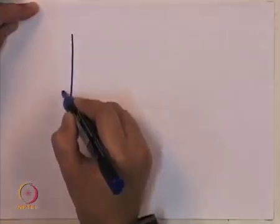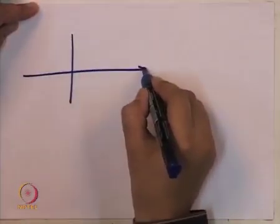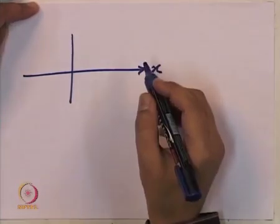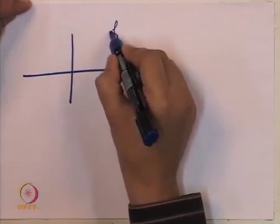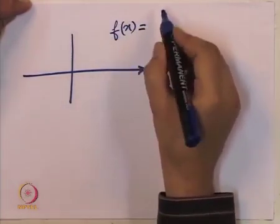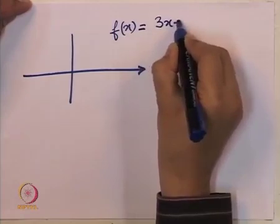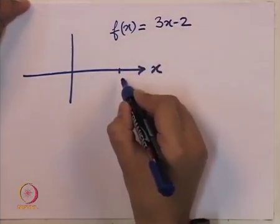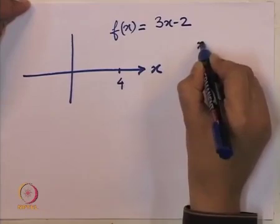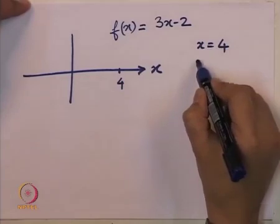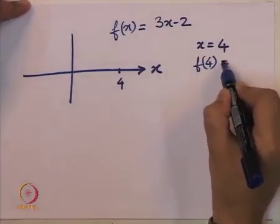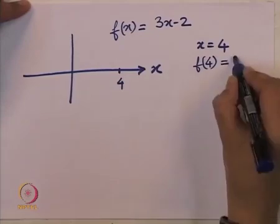This particular situation is best seen using a figure. We are going to attach at each point a vector. Consider f equal to 3x-2. Suppose we take the point x equal to 4. For this point x equal to 4, we evaluate f at 4 and we obtain 14.